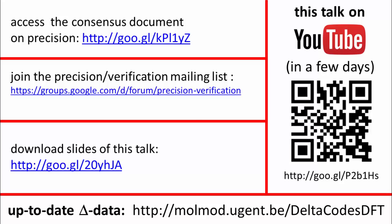If you want the consensus document — the summary of the mailing list discussion — you can download it from the address shown. If you want to participate in this discussion, go to that address to join the mailing list. The slides of this talk can be downloaded from the address shown as well. Tomorrow or the day after you will find the recording of this talk on YouTube. The list of delta values — slightly updated since publication — can be found at the address shown. Thank you very much.